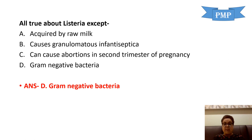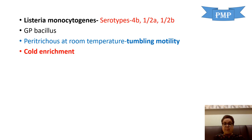Let's quickly go through some important points about Listeria. The species pathogenic to humans is monocytogenes. The most common causes of human disease are the serotypes 4B, 1/2A, and 1/2B — these are the commonest serotypes responsible for human infection.